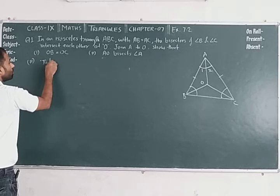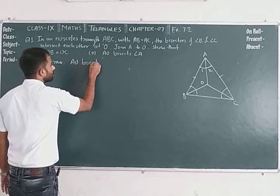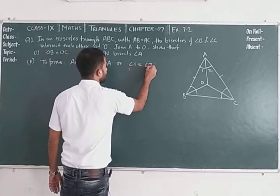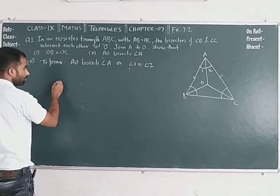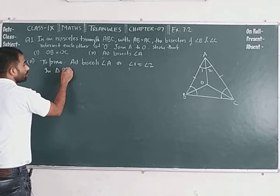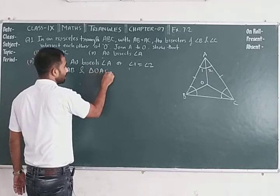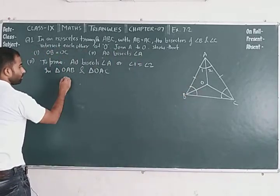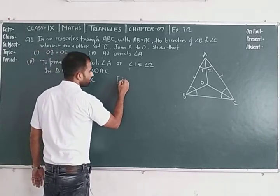To prove part two: AO bisects angle A. It means angle 1 is equal to angle 2. We will consider triangle OAB and triangle OAC.